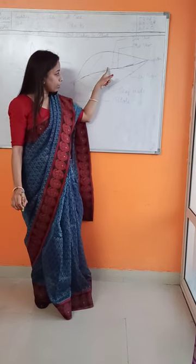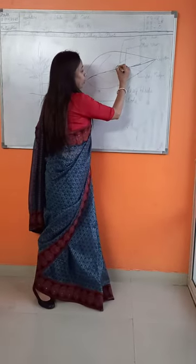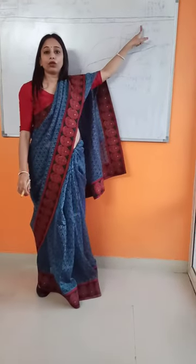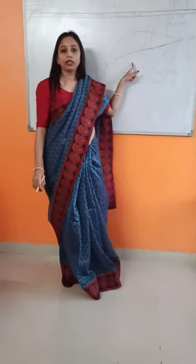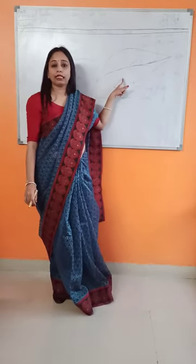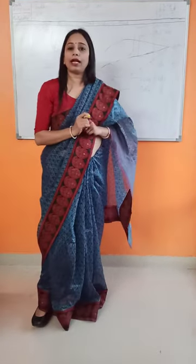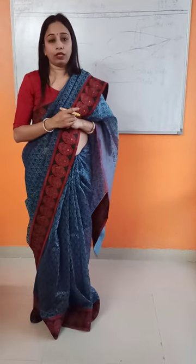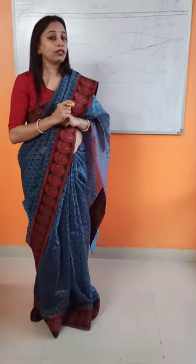If you see, next to this mid-vein, there are thin tube-like structures. They are called side veins or lateral veins. Now these tube-like structures, depending upon their function, are called xylem or phloem. If they conduct water and minerals, they are called xylem tubes. Whereas if they conduct food, they are called phloem.